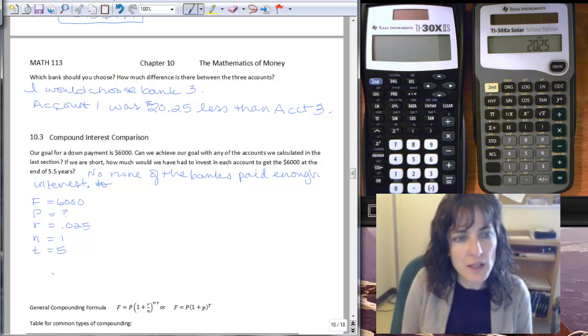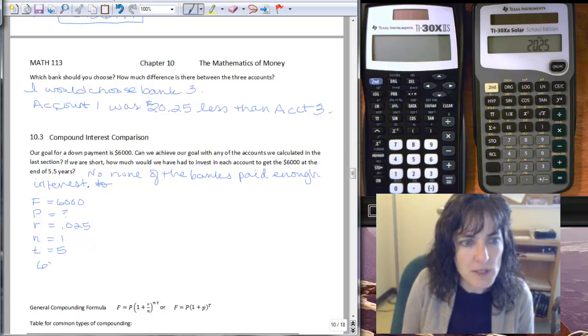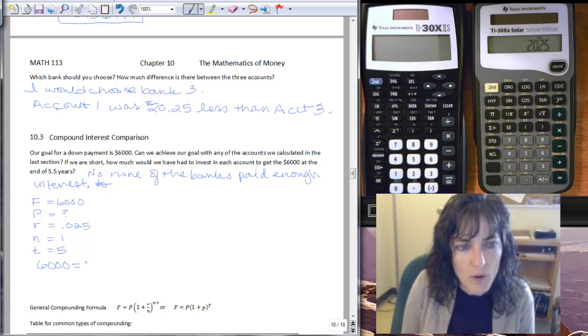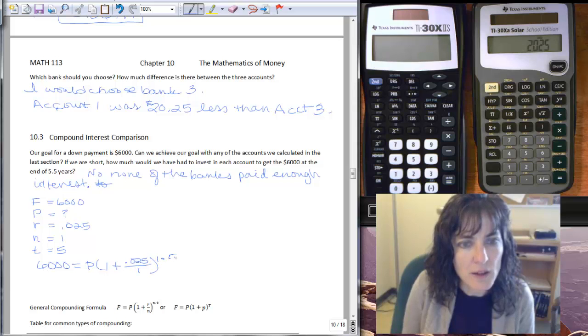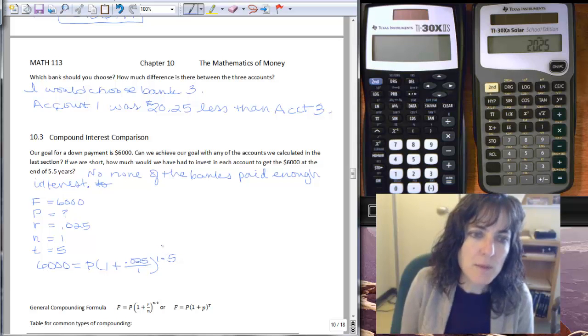And we want to plug all that in and see what we get. So 6,000 equals P times the quantity, one plus R, so 0.025 over N, which was one, N again, and then T. So one times five is just five, so I've got that one.